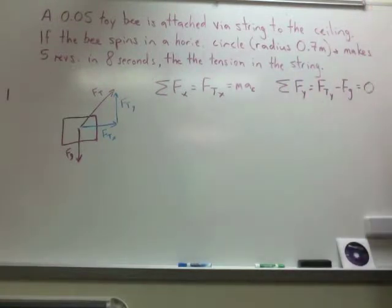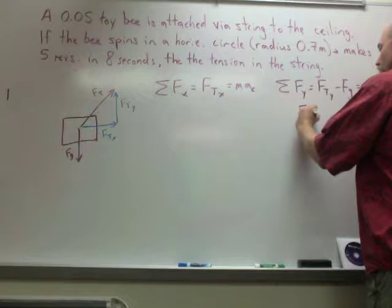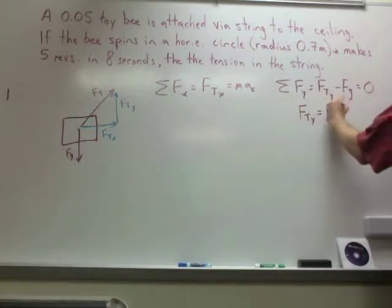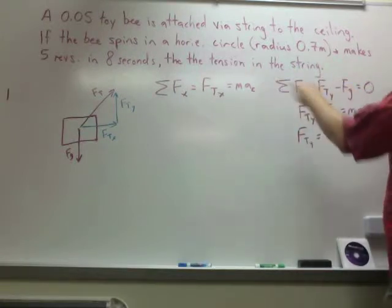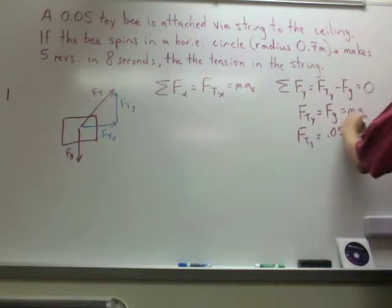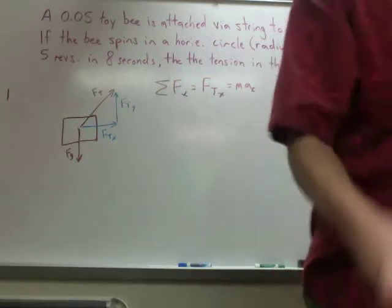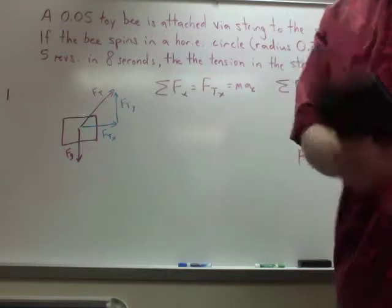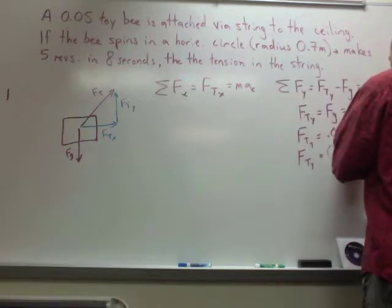So, now we want to plug stuff in and solve. Over here, you're going to get FTY equals FG. Remember, FG equals MG. So, if I plug stuff in, 0.05 times 9.8. So, my FTY, I believe it's 0.49, but let me just do the math to make sure. Yep, 0.49 newtons.